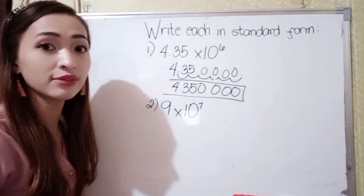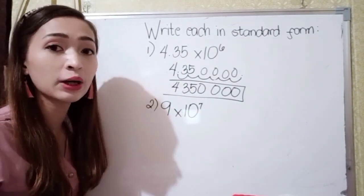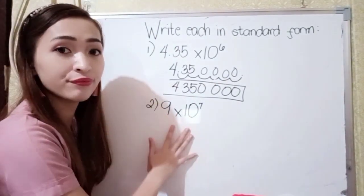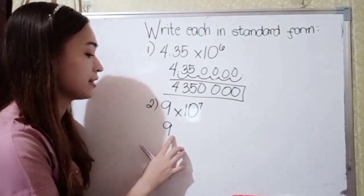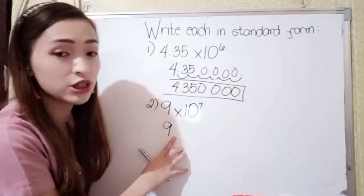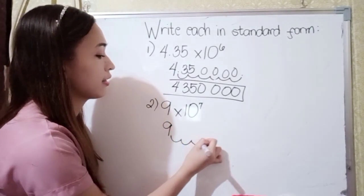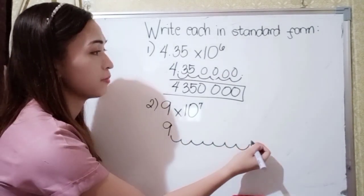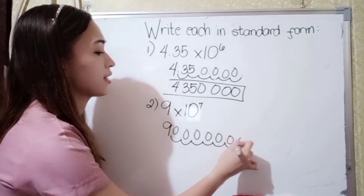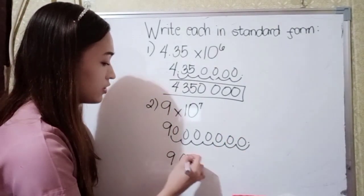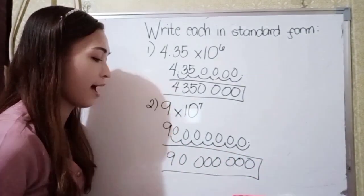For number 2, we have 9 × 10⁷. Instead of multiplying 9 by 10 seven times, we move the decimal point 7 units to the right from 9. Counting: 1, 2, 3, 4, 5, 6, 7. We add seven zeros, giving us 90,000,000 — ninety million. That would be our final answer.